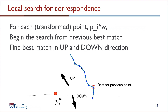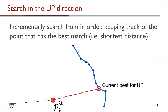For each transformed point p_i^w, the search begins from the previous best match, looking for the best match in the up and down directions respectively. In other words, you initialize the search by setting the best match for the previous point as the current match for p_i^w. Starting in the up direction, you incrementally search in order while keeping track of the point that has the best match — that is, the shortest distance to p_i^w.